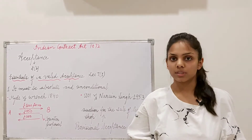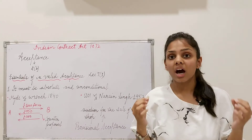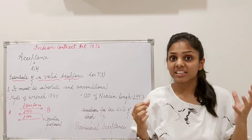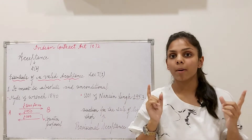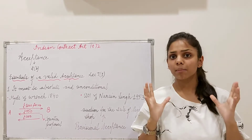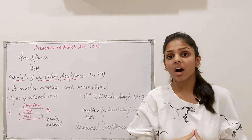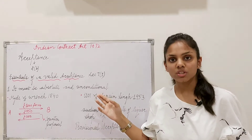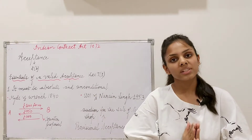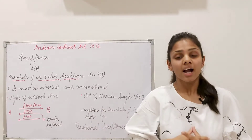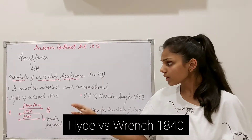Absolute means 100%. The acceptance B gives to A must be absolute — it must be 100%, meaning this acceptance must be a mirror image of the proposal made to him by A. There should be no changes at all; only then will it be a valid acceptance. And secondly, it should be unqualified, meaning unconditional — there should be no conditions. It should not be partial and it should not be provisional. Let us now discuss the case law Hyde v. Wrench 1840.